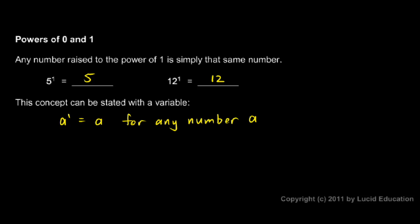Anything raised to the power of 1 is simply that number, and that should make sense. Remember what the exponent is. The exponent tells us the number of times that the base appears as a factor. So if it's just used one time and not multiplied by anything, it just shows up.